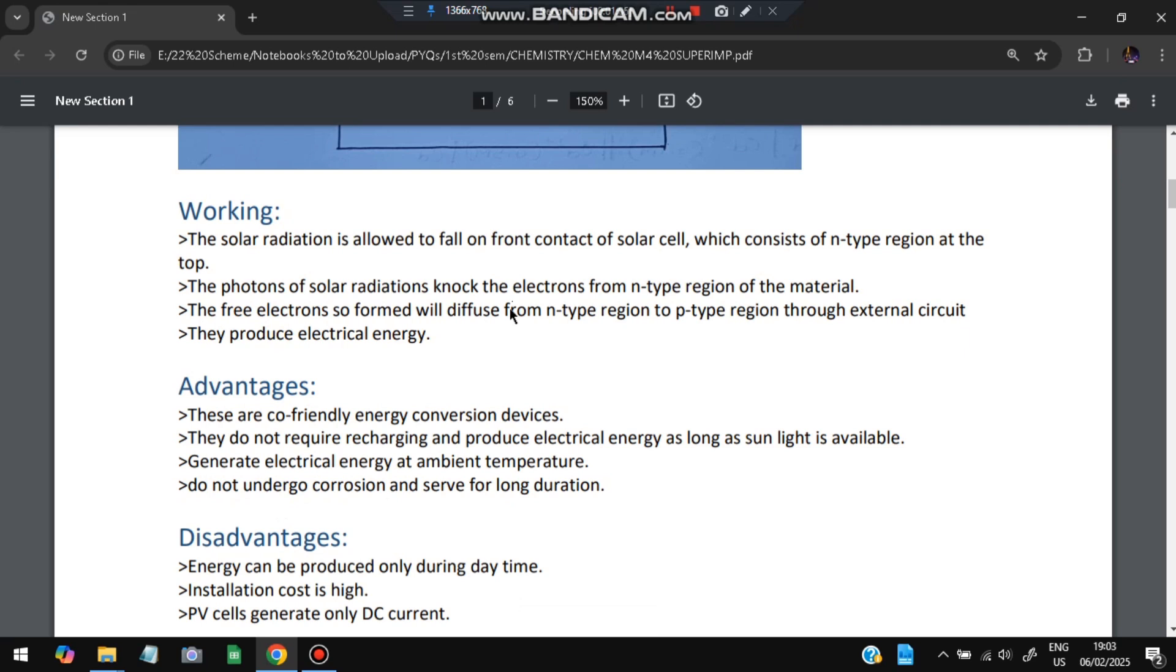Solar radiation is allowed to fall on the front contact of the cell which consists of n type region at the top. The photons of the solar radiation knock the electrons from the n type region of the material. They flow from the n type to p type so that electricity is generated.